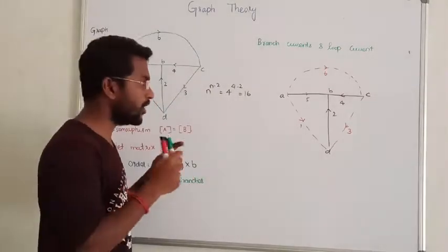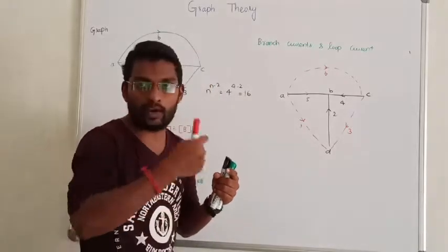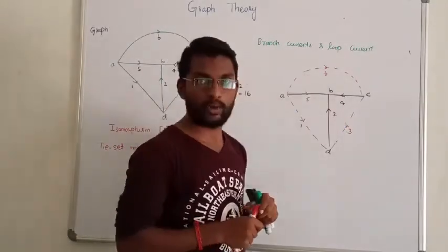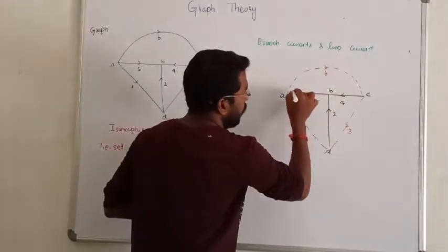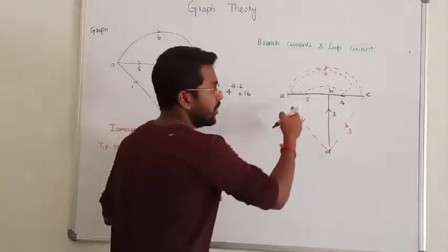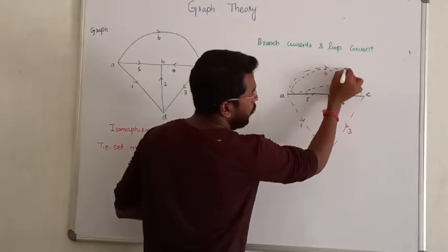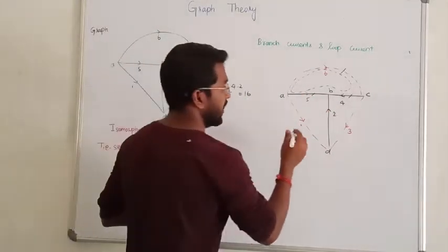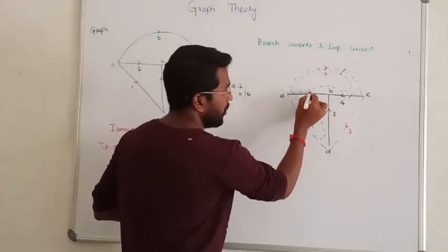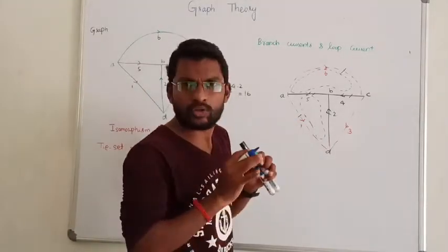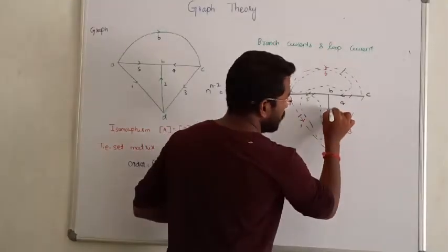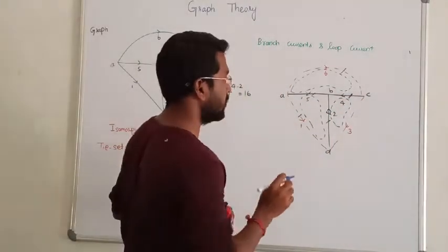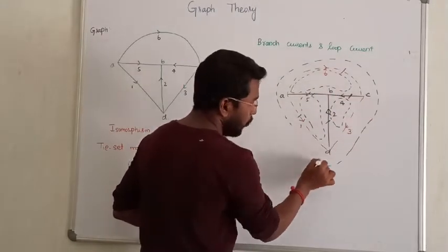Now the tie set matrix will form one loop per link. Each loop is formed by considering one link plus some twigs. For every link we include, we form one loop. We cannot consider more than one link per loop. So for link 1 we form one loop, for link 3 another loop, and so on. The loop formed must contain exactly one link and the rest twigs.